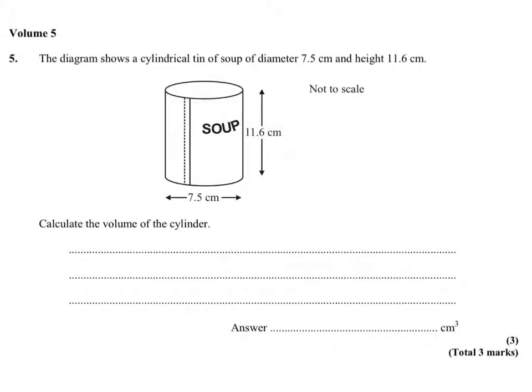We're asked to find the volume of this cylinder. Now a cylinder is a prism, so we've got to work out the area of this circle that I'm colouring in